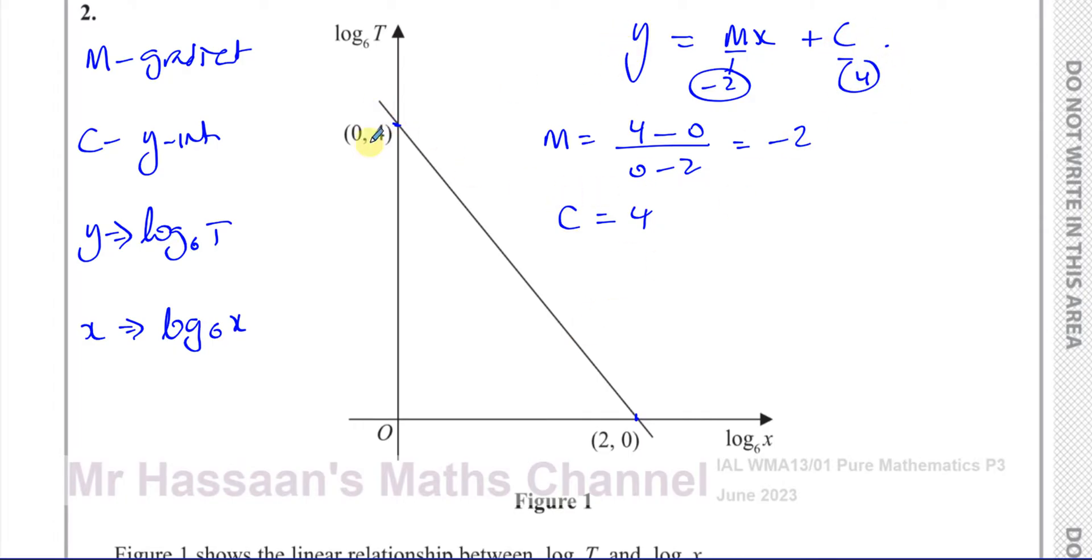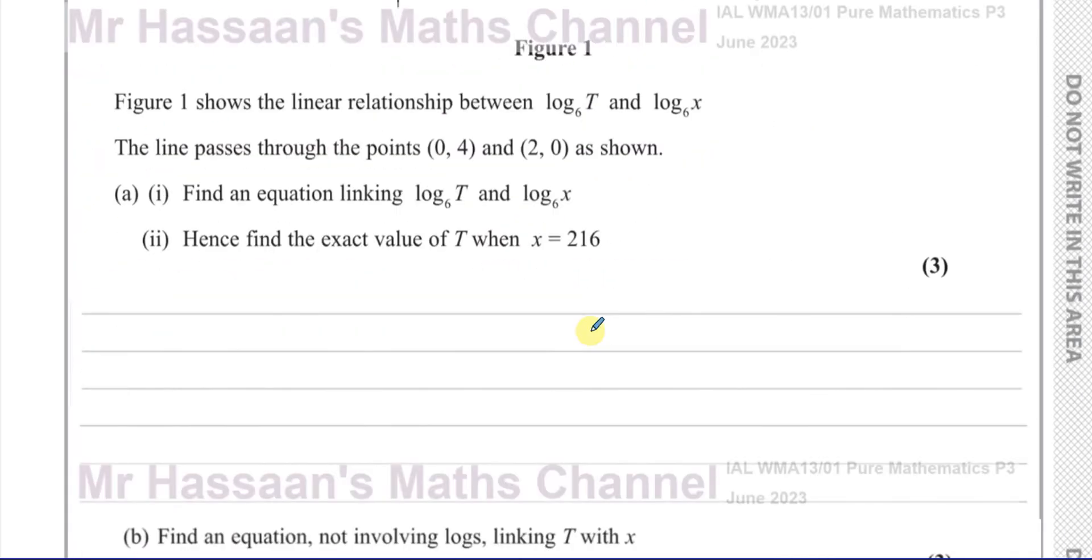And the Y-intercept we can see is 4. It goes through 4 on the Y-axis, as we're told. We can replace Y with log to the base 6T. So we know the gradient is negative 2, Y-intercept is 4. We have log to the base 6T equals minus 2 log to the base 6X plus 4. So that's the equation, that's part one.